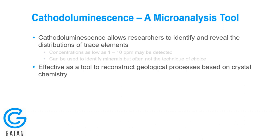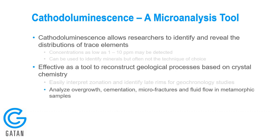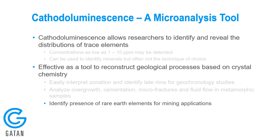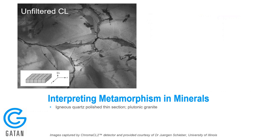This underlines why CL is such a powerful microanalysis tool — it allows us to identify and reveal the distribution of trace elements within a crystal, and importantly, concentrations can be as low as a few parts per million, detectable within a few seconds. Understanding the trace element chemistry allows us to reconstruct geological processes — understanding crystallization processes such as zonation in zircons, analyzing metamorphic changes including overgrowth and cementation, fluid flow, identifying rare earth elements for mining applications, and in some cases performing quantitative thermobarometry for oil and gas recovery.